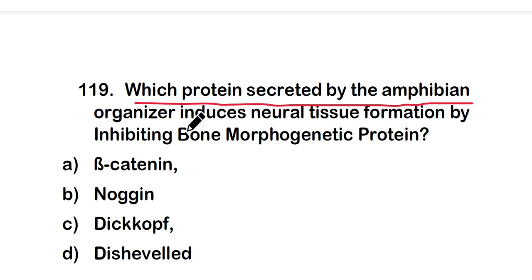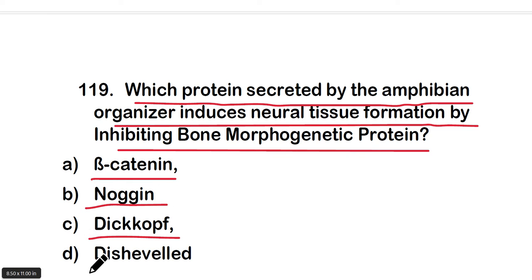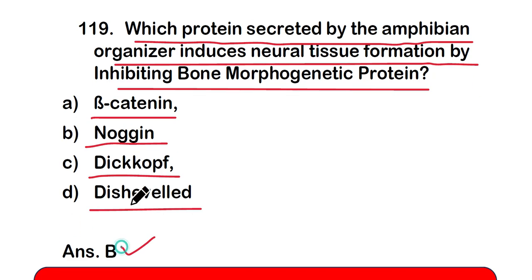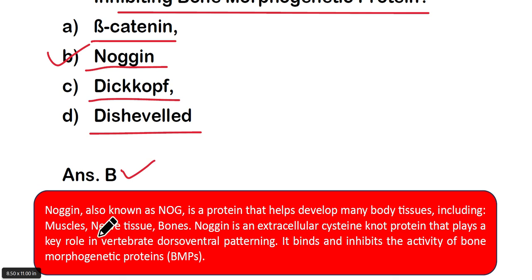Question 119: Which protein secreted by the amphibian organizer induces neural tissue formation by inhibiting bone morphogenetic protein (BMP)? (a) beta-catenin, (b) noggin, (c) dickkopf, or (d) disheveled. The correct answer is option B — noggin. Noggin is an extracellular cysteine-knot protein that plays a key role in vertebrate dorsal-ventral patterning by binding and inhibiting the activity of bone morphogenetic protein.